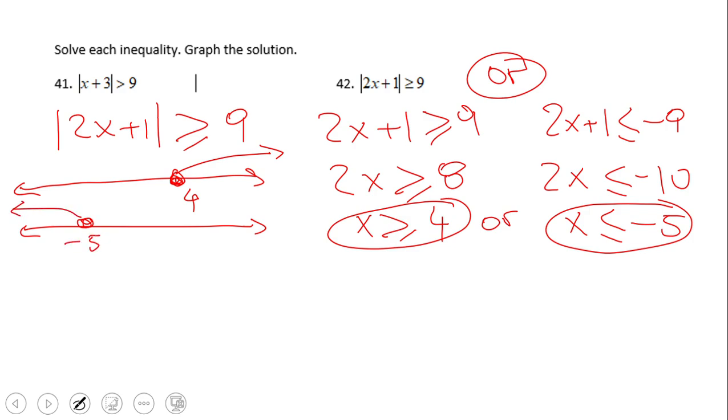So this is the picture that represents two solution sets: x greater or equals 4 and the other one x less or equals negative 5. In the third picture, we're going to put the solution set for our inequality, which is the union in this case. We're going to put them together. Okay, that is the solution set.